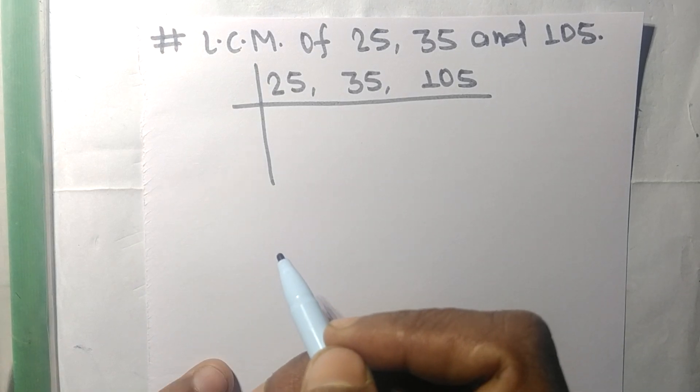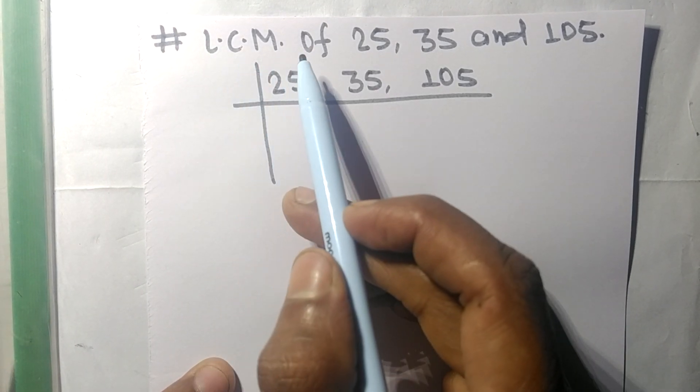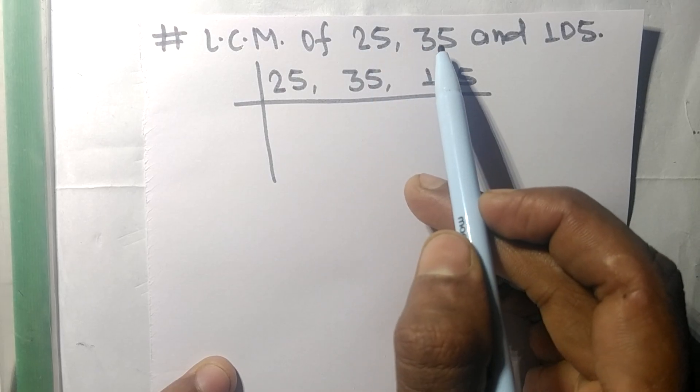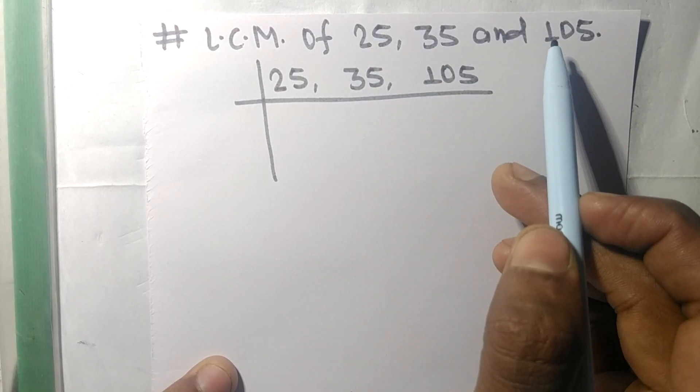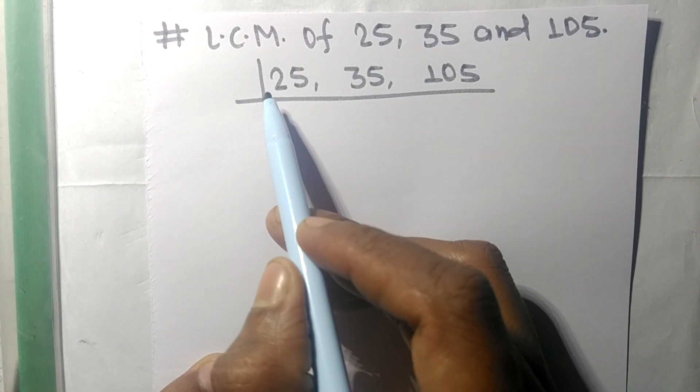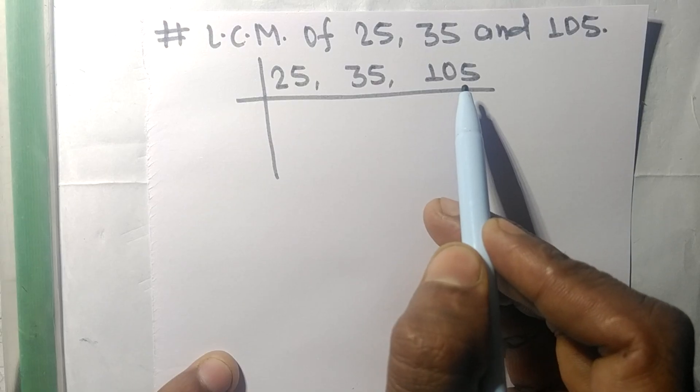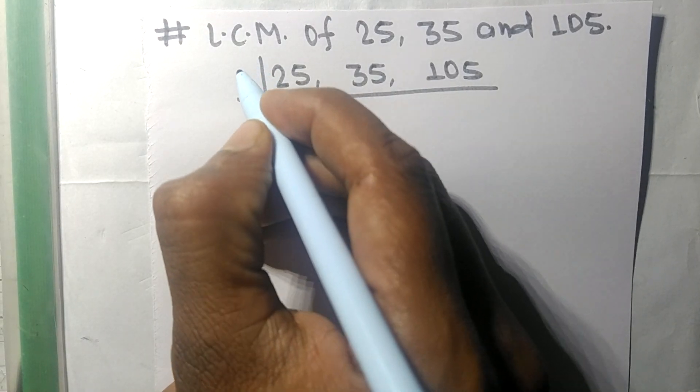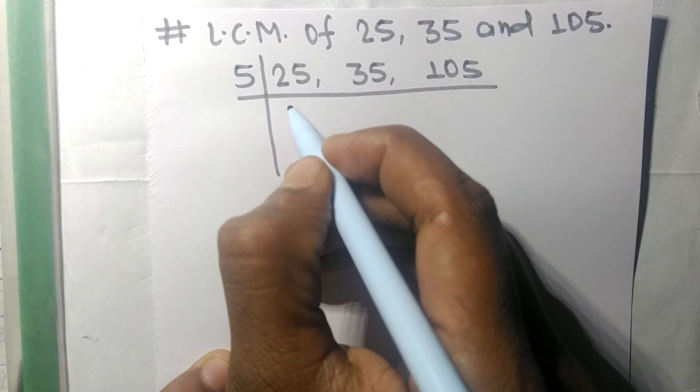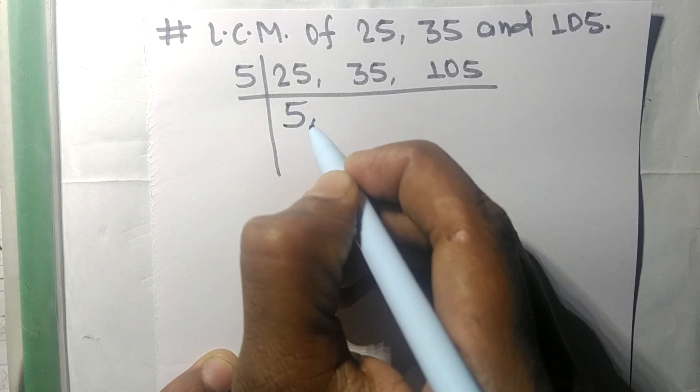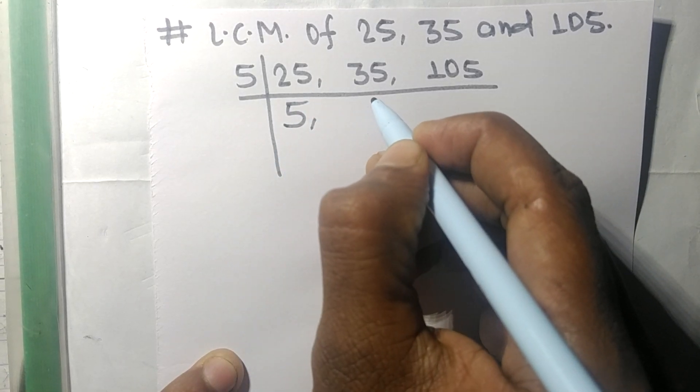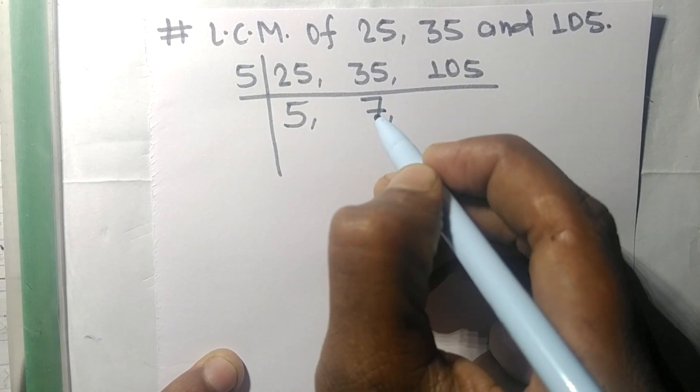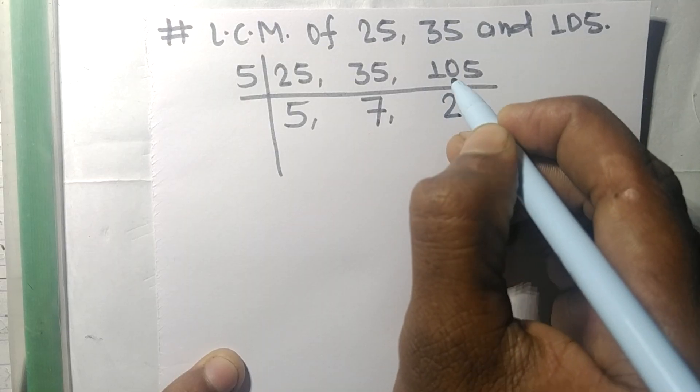Today in this video we shall find the LCM of 25, 35, and 105. These all numbers are exactly divisible by 5, so 5 times 5 means 25, 5 times 7 means 35, 5 times 21 means 105.